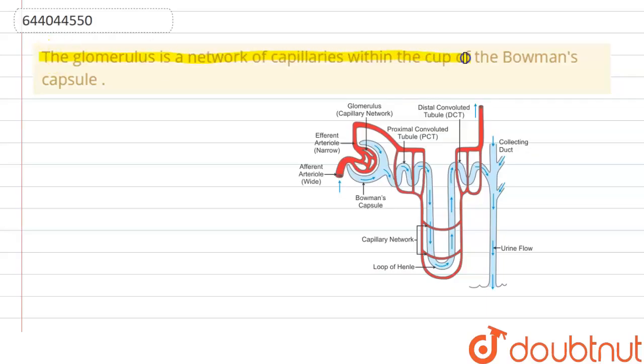The question here is that the glomerulus is a network of capillaries within the cup of the Bowman's capsule. This is a true and false type of question, and the statement is a true statement because if we talk about the nephron...